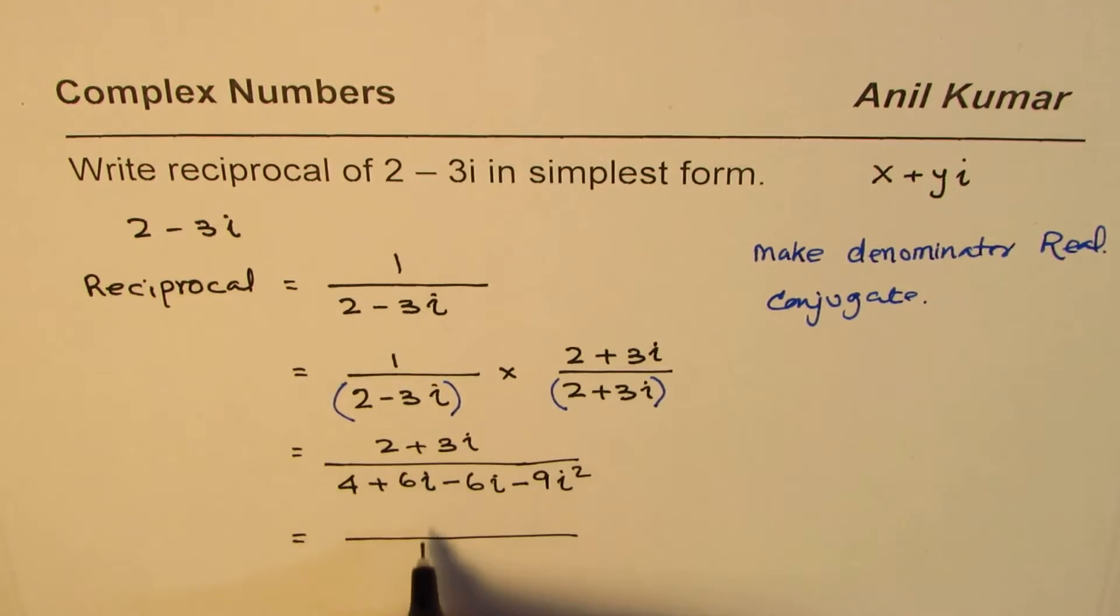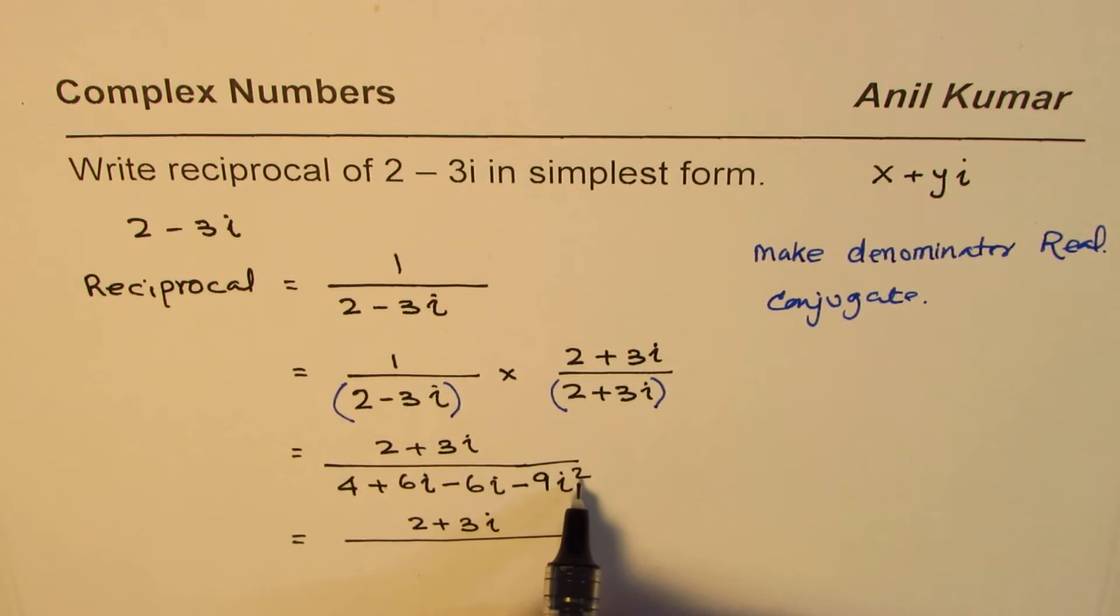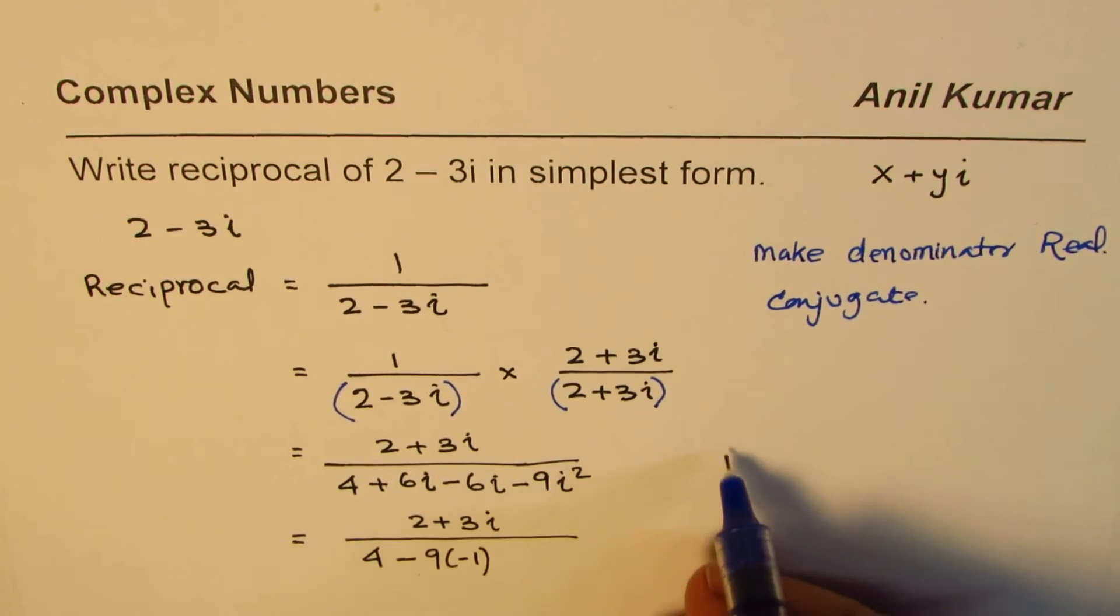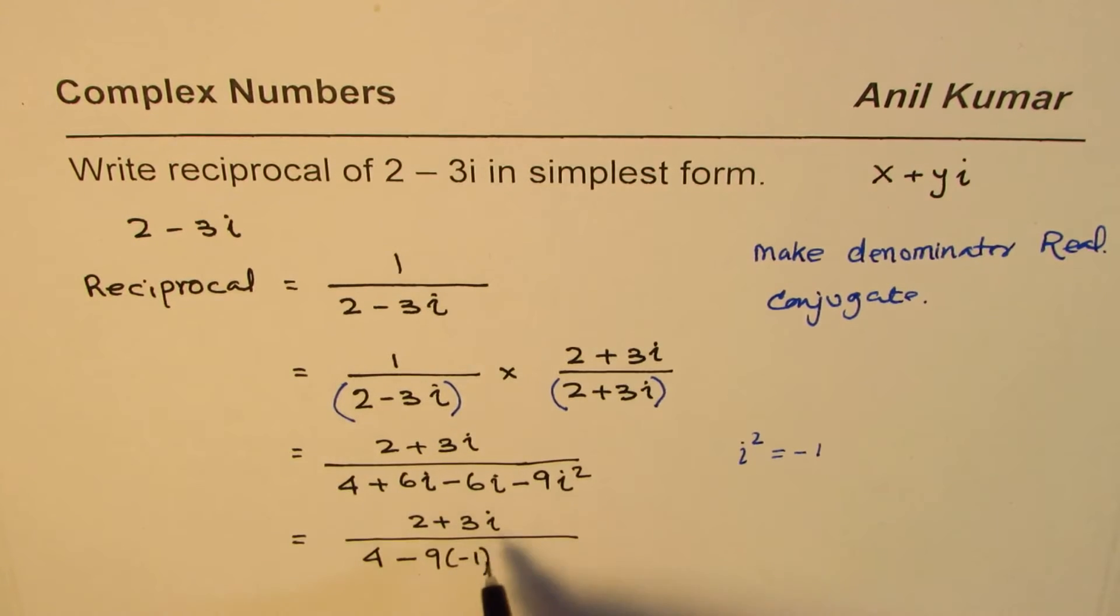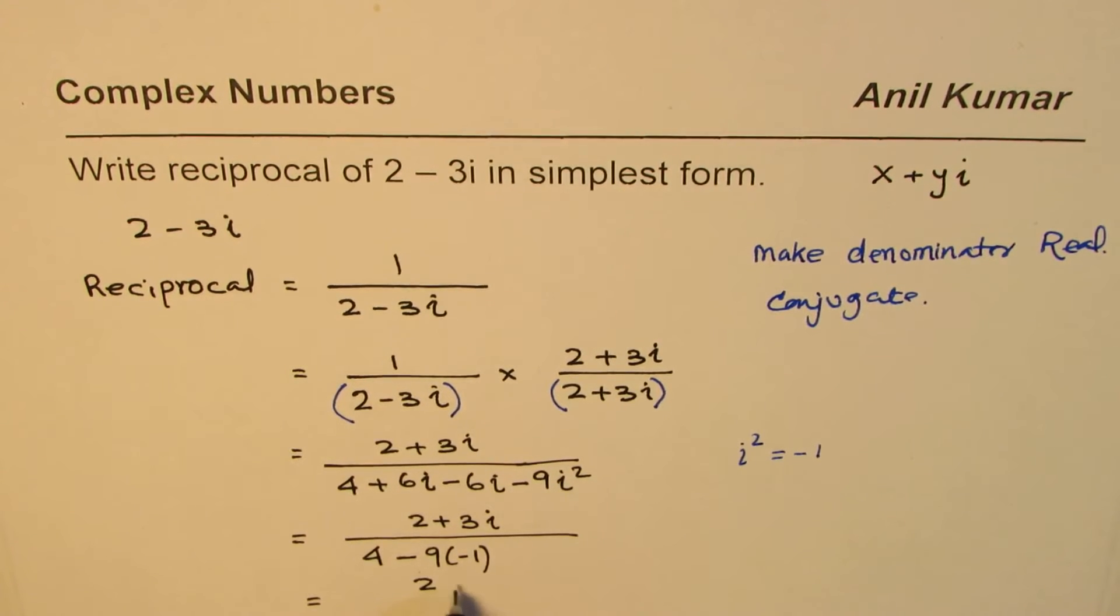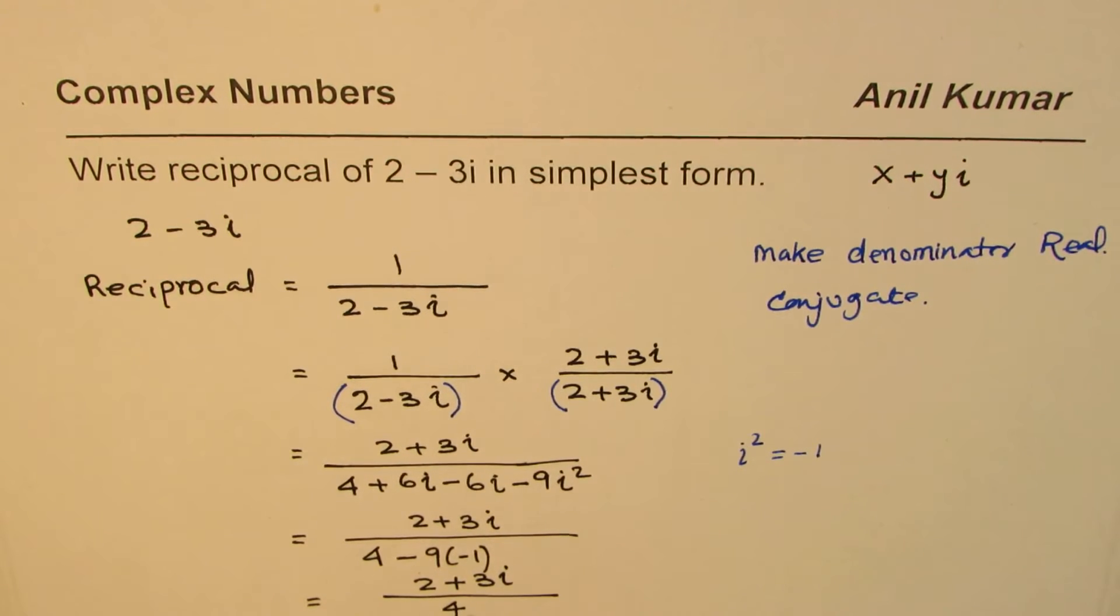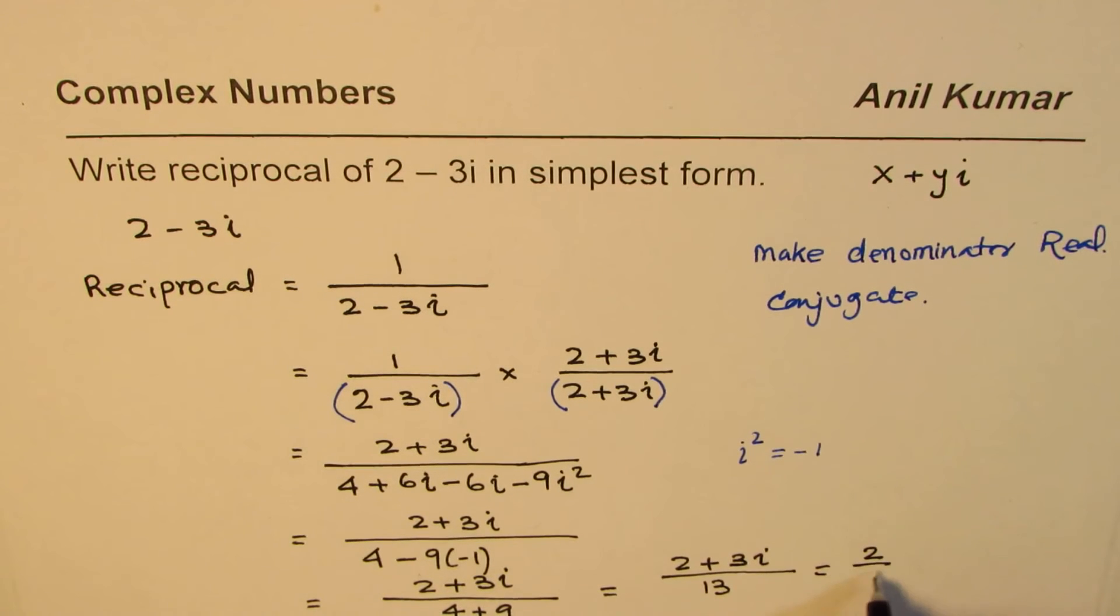What we get in the denominator is 2 plus 3i divided by 6i minus 6i is 0, and i squared is minus 1. We can write this as 4 minus 9 times minus 1. Since i squared is minus 1, we could write this as 2 plus 3i divided by 4 plus 9, which is 2 plus 3i over 13.